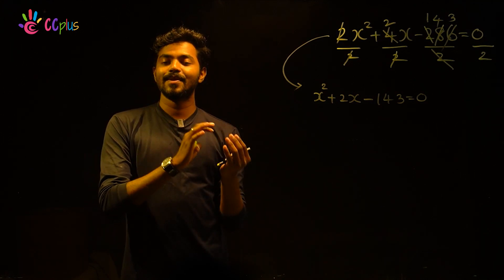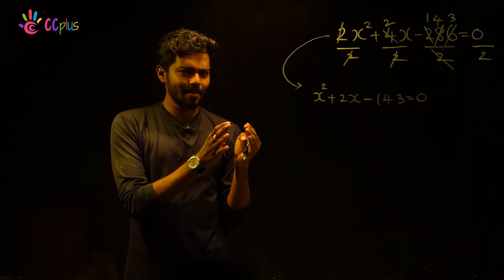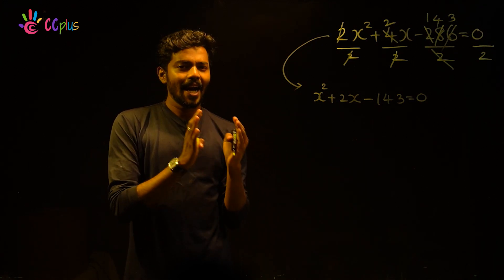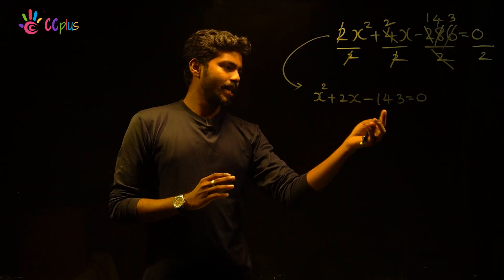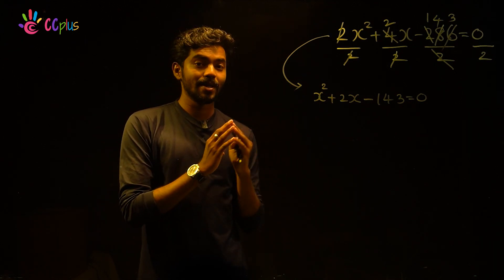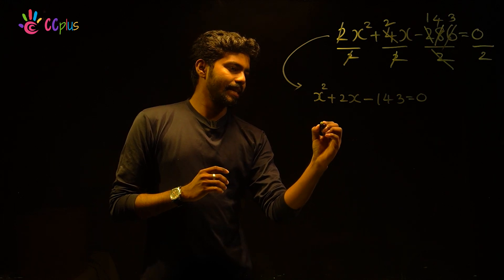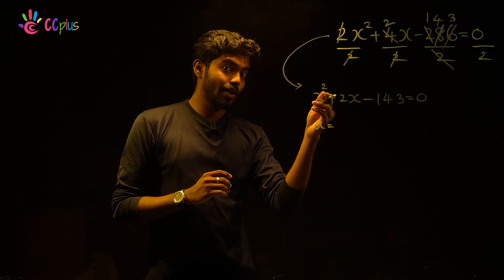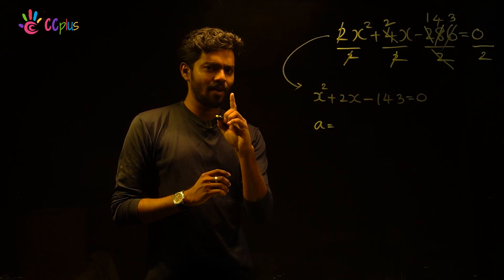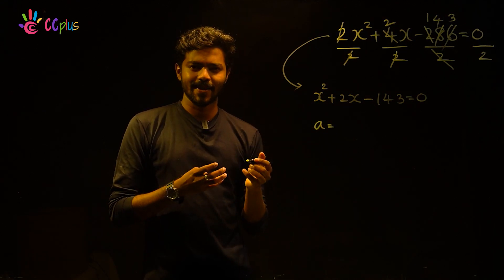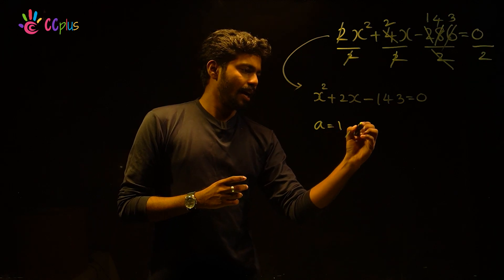This is the reduced quadratic equation. Now we apply the direct formula: x is equal to minus B plus or minus root of B squared minus 4AC, all divided by 2A. Here, the value of a equals 1.